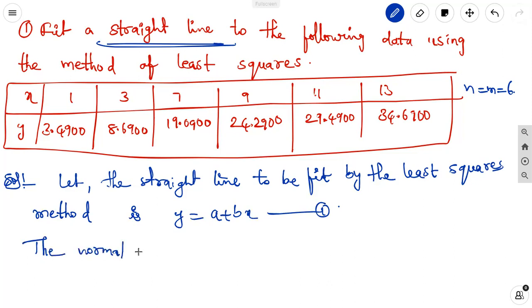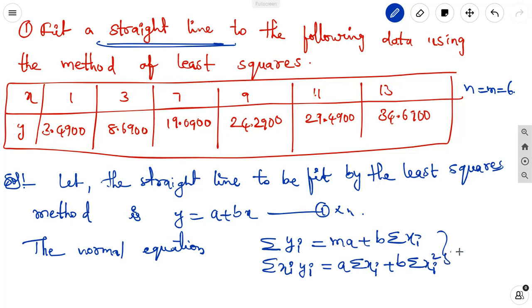Already we defined the normal equations in the straight line. Those are the normal equations are: we remember the normal equations, how we can take it from equation 1. Taking the summation of equation 1, that is sigma yi equal to ma plus b sigma xi. Next, multiplying with x, we get the second equation sigma xi yi equal to a sigma xi plus b sigma xi square. It is equation 2.